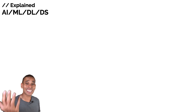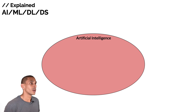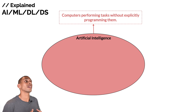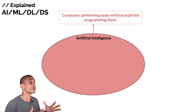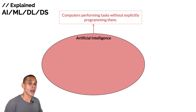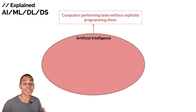Let's kick things off and take a look at AI. AI is really to do with the ability of computers and machines to perform tasks without explicitly programming them — otherwise known as the ability for computers and machines to think by themselves.